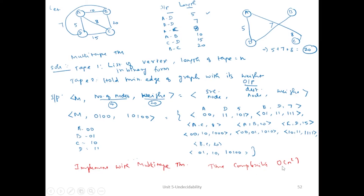The Turing machine is deterministic since the output is only in yes/no format, implemented in a multi-tape Turing machine. The time complexity for implementing Kruskal's algorithm is O(N²). In this way, we can calculate Kruskal's algorithm with the help of a multi-tape deterministic Turing machine.